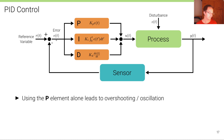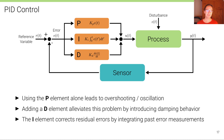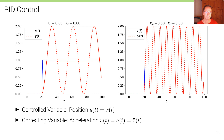The error is signed — it's R minus Y — so we are simply changing the sign. Therefore, a differential element is important; adding a D element gives what's called PD control. Adding a D element to the proportional control alleviates the overshooting problem by introducing a damping behavior and thus avoiding oscillation. Finally, the full PID controller also comprises an integral element, which is able to correct residual errors by integrating past error measurements.